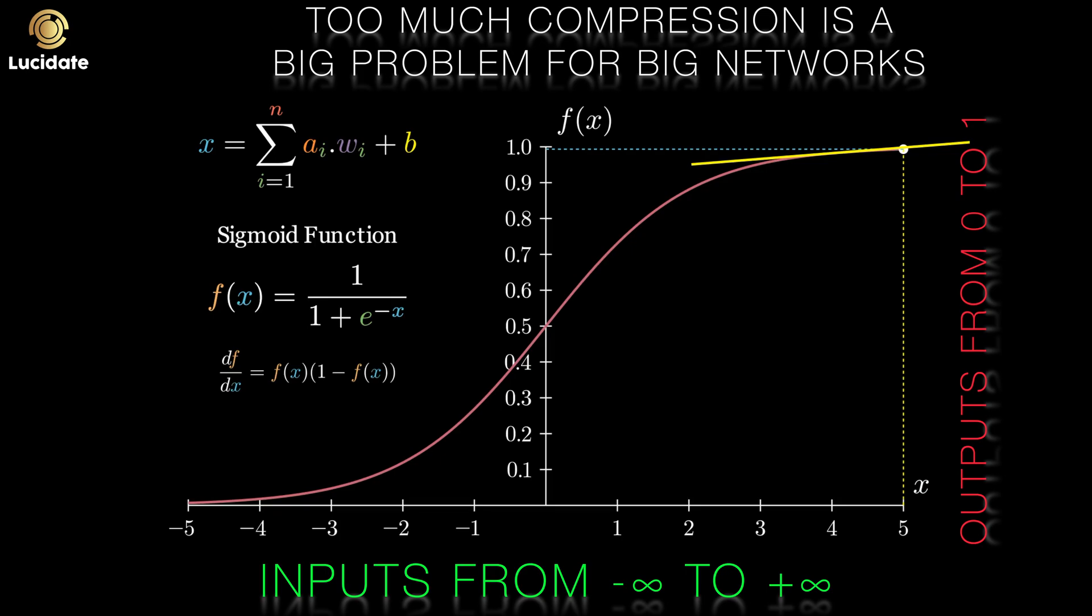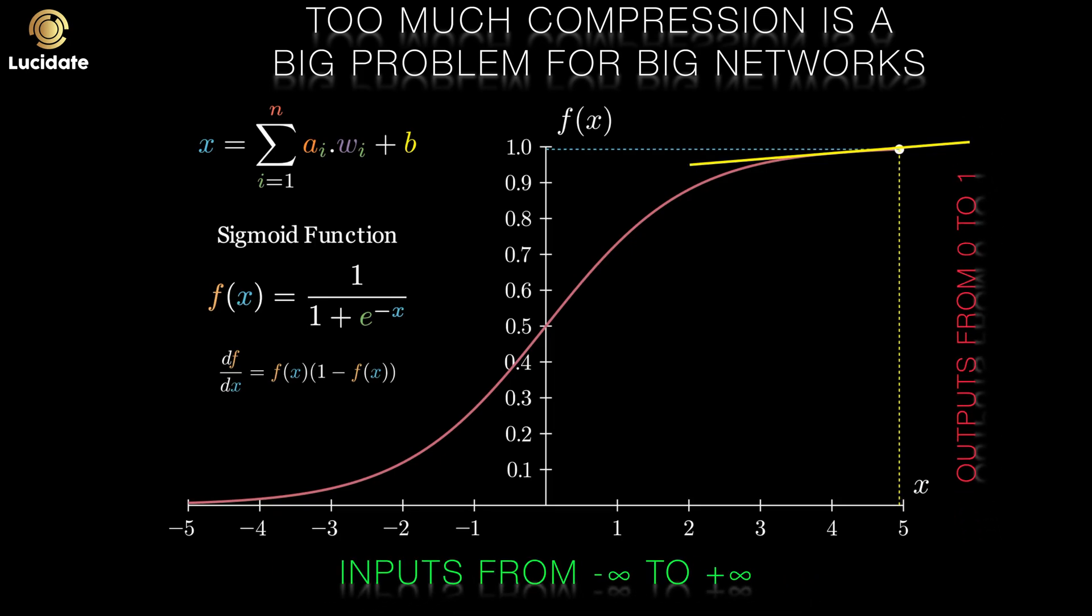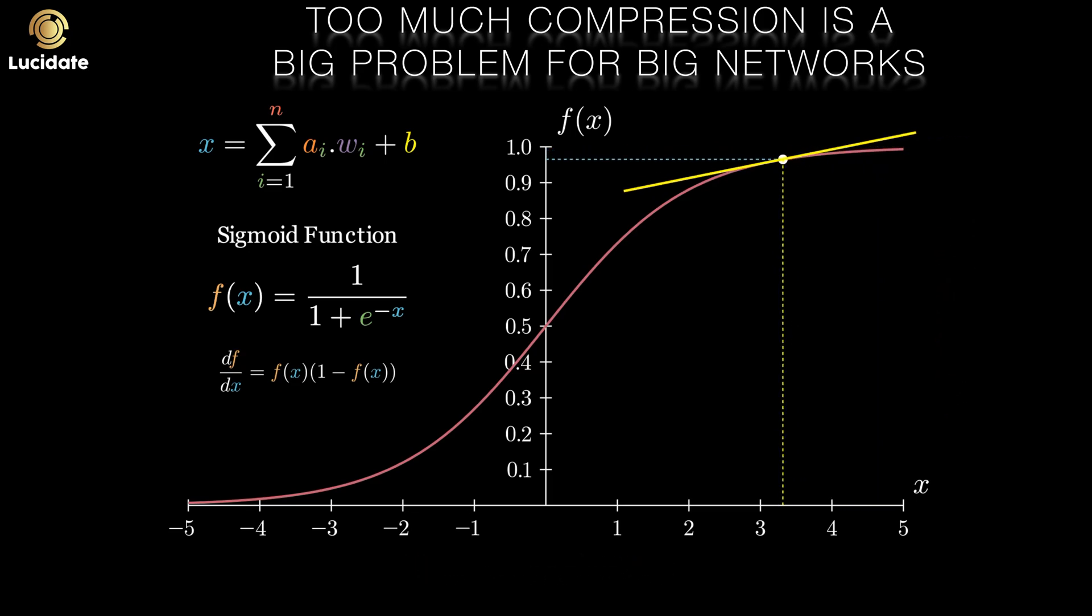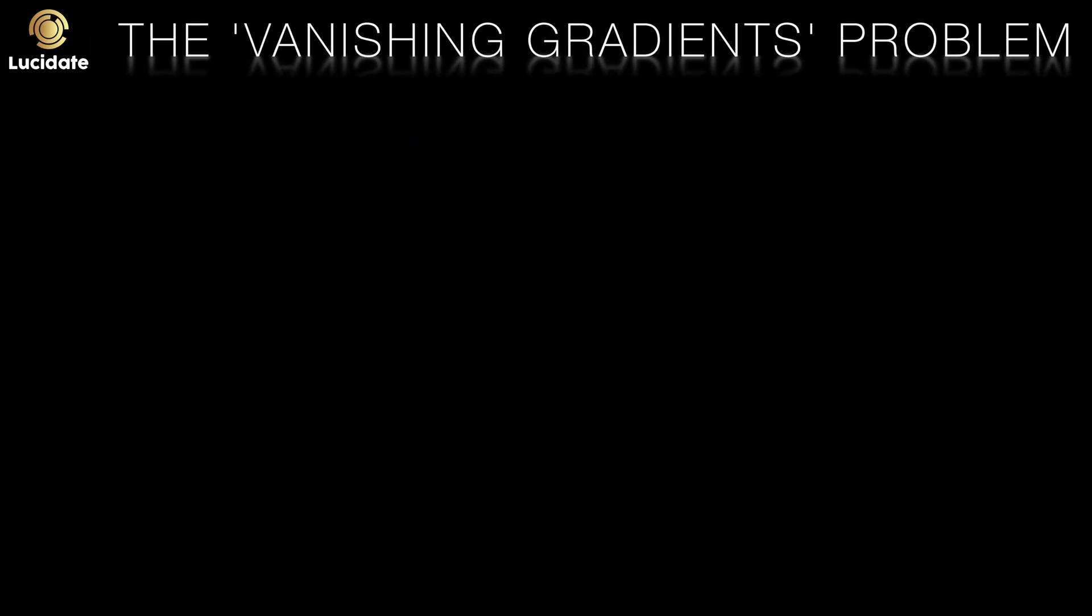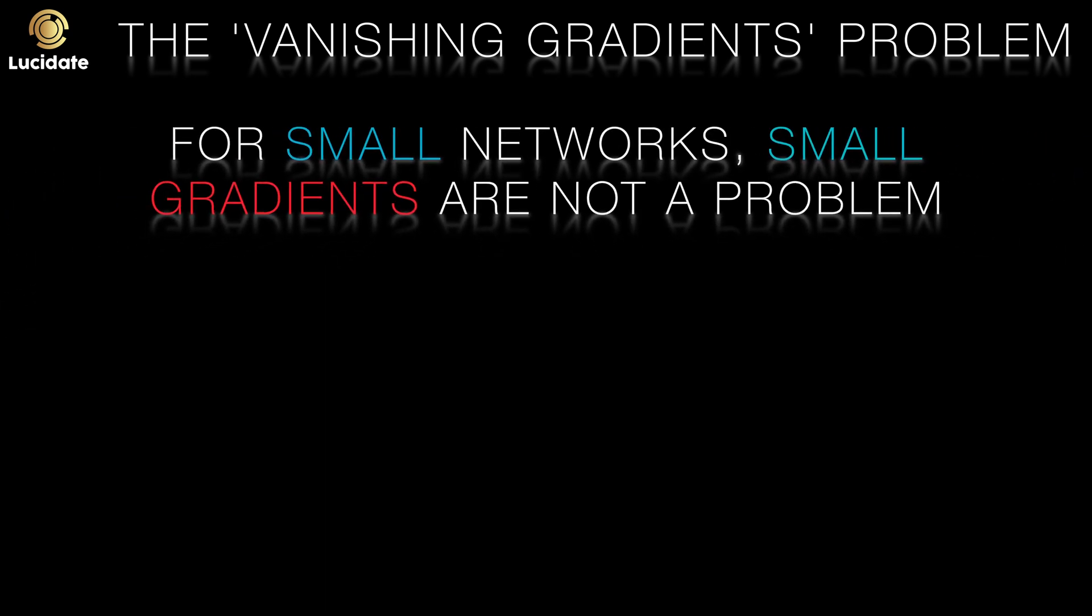Small derivatives will mean only tiny changes to weights and biases in training, and this will slow down the rate of learning in the network. Now, back in the 1980s, this frankly wasn't much of a problem. Most neural networks were quite small, with only a few neurons and a small number of layers. But as networks grew bigger, you started having small gradients multiplied by other small gradients in training.